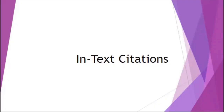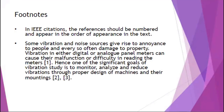Let's talk a little bit about in-text citations. In-text citations are the citations that you put within the text that you're writing. You're attributing an idea that you have included in your paper or project to an author, giving credit where credit is due, so the person reading it knows where the information came from. The in-text citations in IEEE format are numbered and appear in the order of appearance in the text in the form of footnotes.